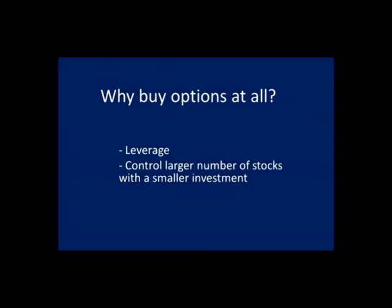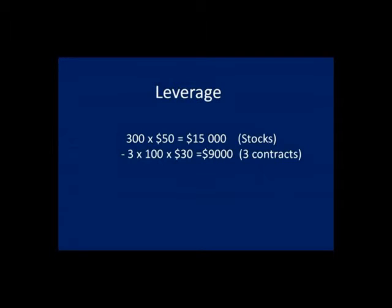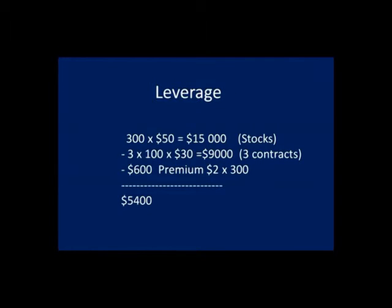Let me show you an example. Let us say that John buys 300 shares for $50 each — it would cost him $15,000. If he instead buys three call option contracts for, let us say $30 per contract, it would cost him $9,000 plus the premium of, let us say $2 per share. You would then have $5,400 left.